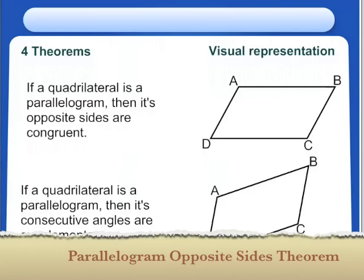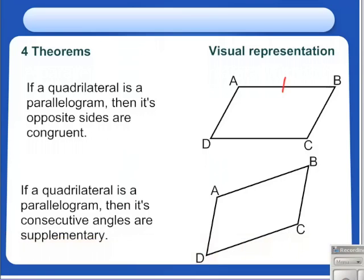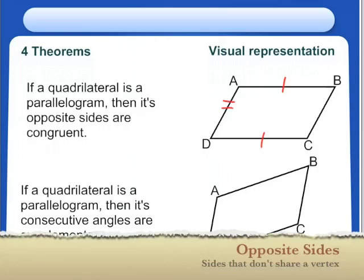So the first one, if a quadrilateral is a parallelogram, then its opposite sides are congruent. So if segment AB is congruent to segment DC, AD is congruent to segment BC. So if I give it a value, if segment AB is equal to 10 centimeters, then we know segment DC is also equal to 10 centimeters. Because opposite sides are congruent.